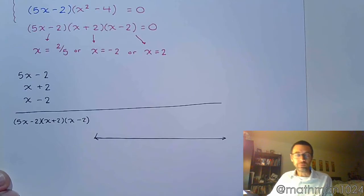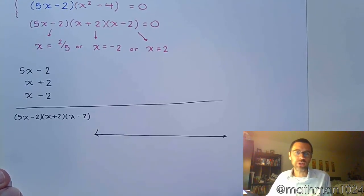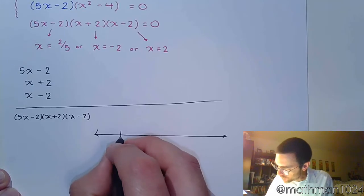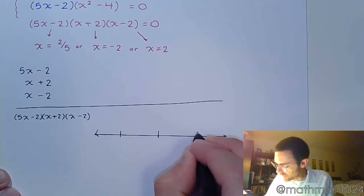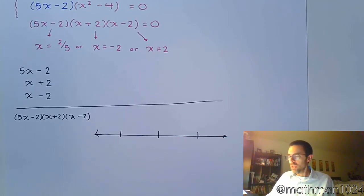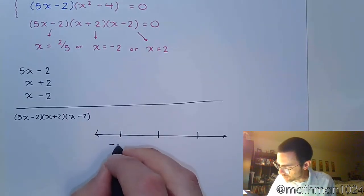Alright. We just have to make sure that we put our critical values in the right order. So we see we've got negative 2, so that's the only negative number, so that's on the left.